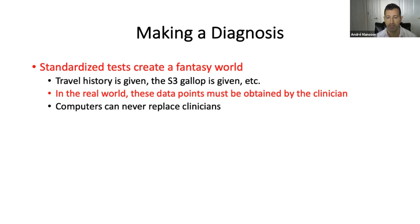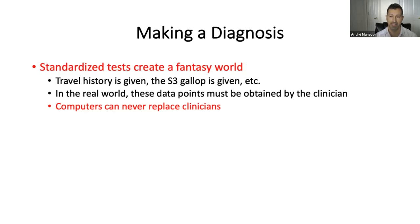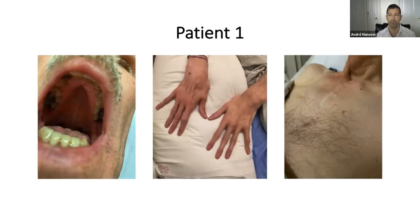The clinician has to realize that travel history is important and then ask that question. In the case of the S3 gallop, the clinician has to know that listening to the heart is important, has to be able to skillfully listen to the heart, has to identify that S3 gallop, and then has to understand how that S3 gallop shapes the case. That's why computers will never replace clinicians — someone has to gather those clues that go into the machine, and that is what a clinician does.